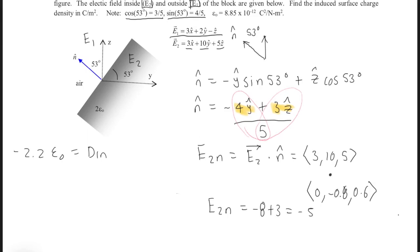And then we can plug that into our D2n, our electric displacement, which would be 2ε₀ times E2n, which would give us -10ε₀. And the reason why we're using 2ε₀ is because the E field, or E2 inside the block, has the permittivity of 2ε₀. Alright? So now we have our D1n and D2n.